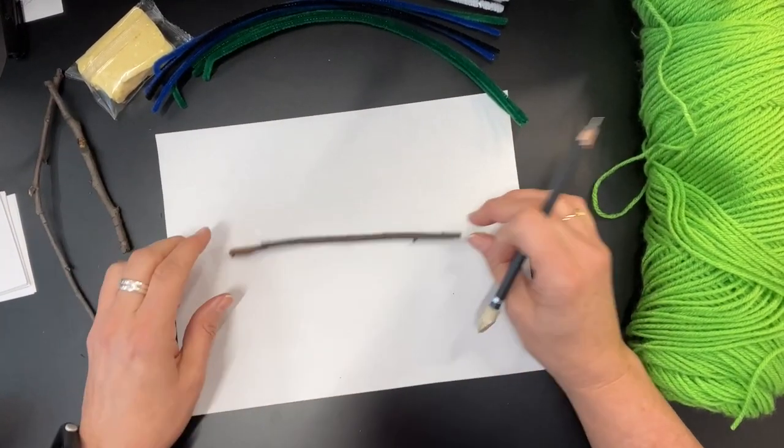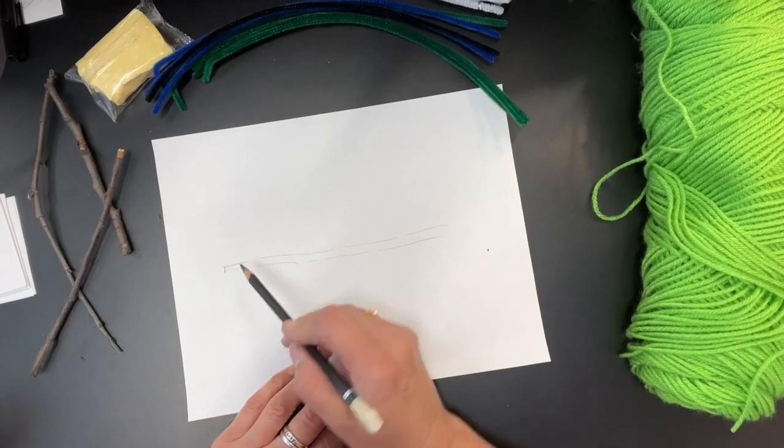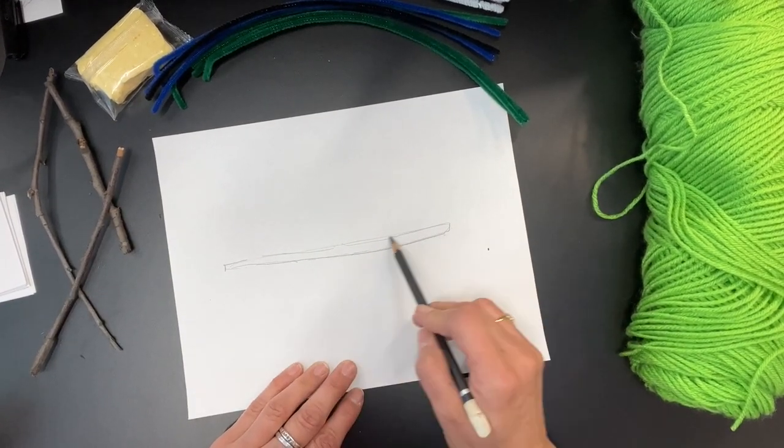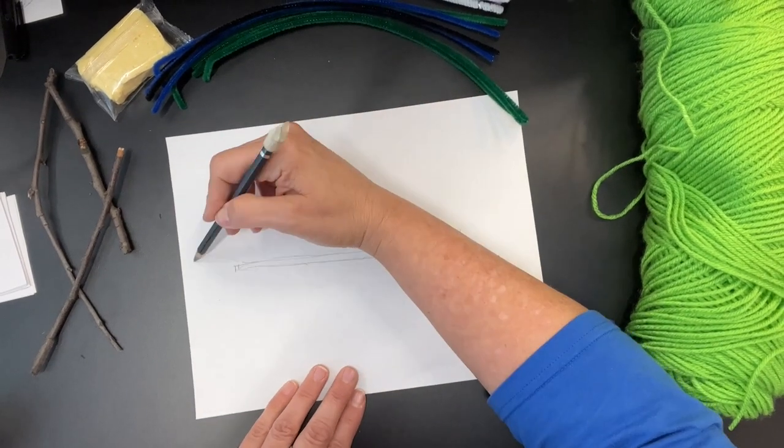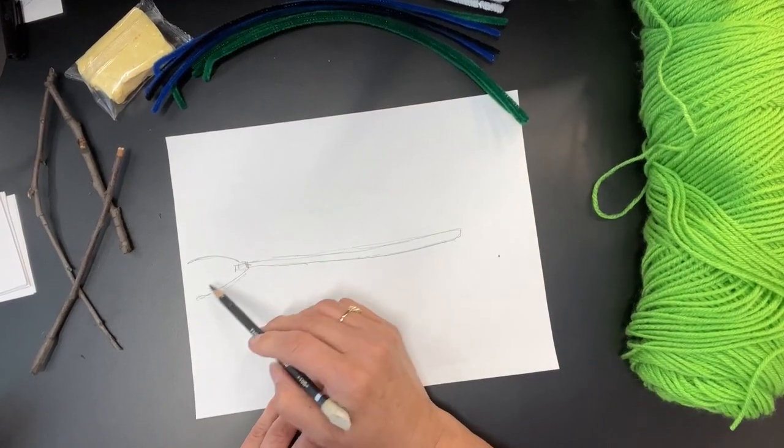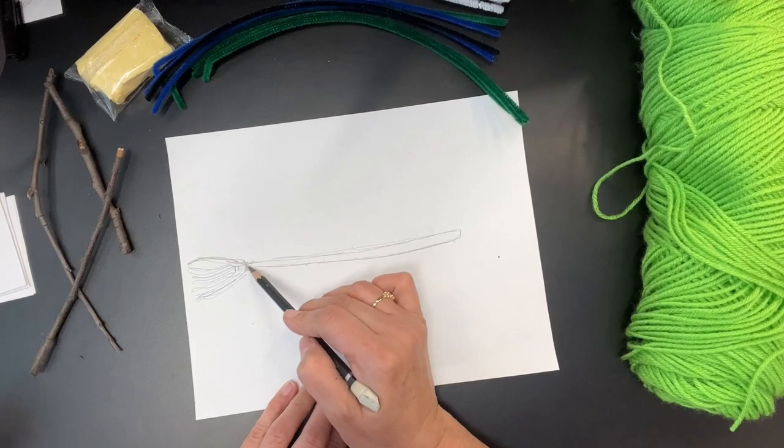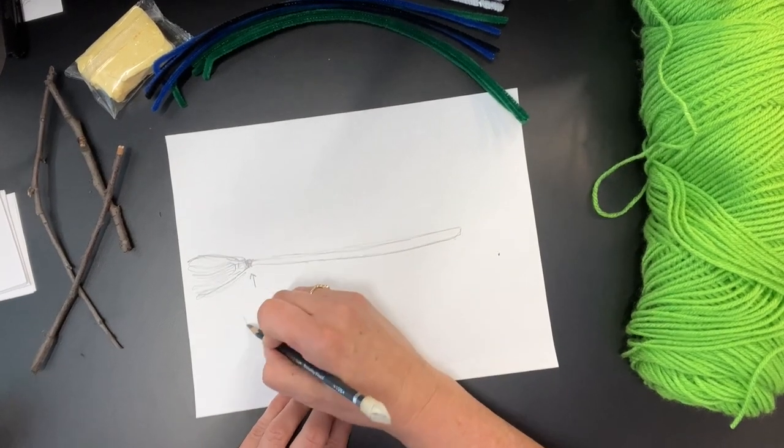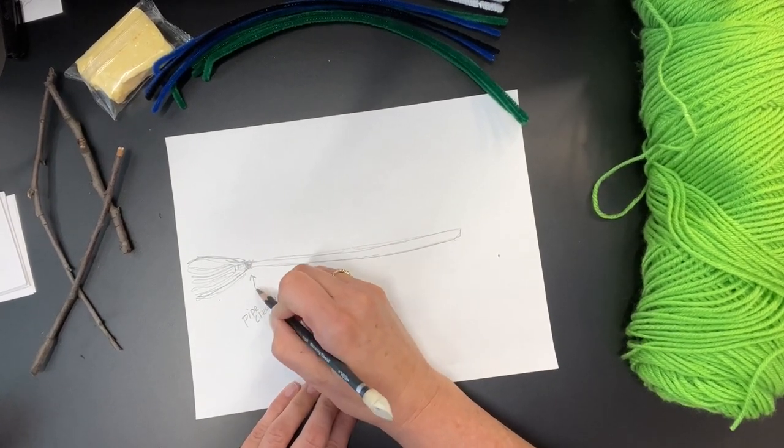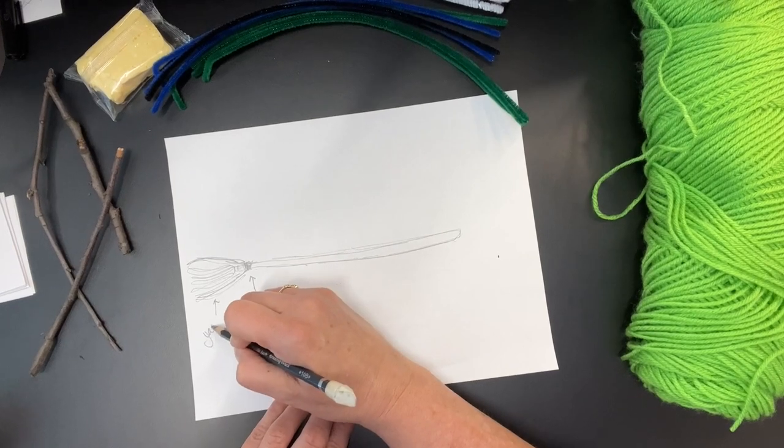Sketch out your stick and then decide what you want your broom to look like. I wanted my broom to be traditional and have the back end look like a broom. I'm writing right here on my plan what I'm thinking I'm going to use - pipe cleaner and yarn.